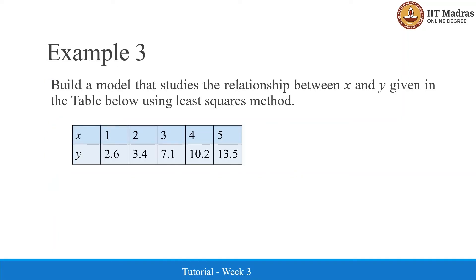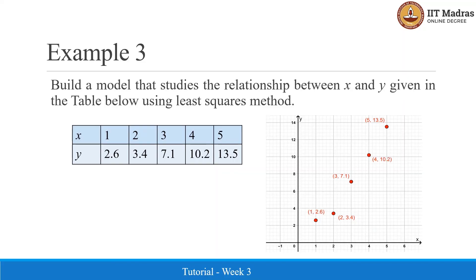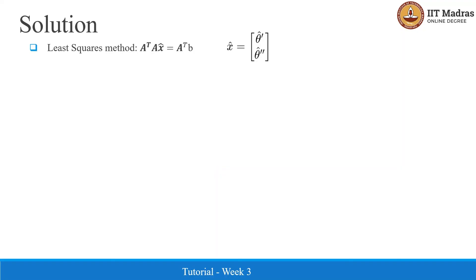In this example, we are given a table of data points with x and y, and we are going to find the best line fit. This is the plot of data points in the x-y plane. You can see that x and y have some kind of linear relationship. By using the least squares method, we are going to find the best solution x-hat. To do so, let us find the values for A-transpose A and A-transpose b and set up the system of linear equations to solve for x-hat.